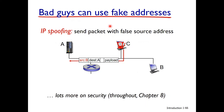Bad guys can also use fake addresses — this is called IP spoofing. The attacker sends a packet with a false source address. The message has a destination and a payload, but the source address is faked, hiding the real attacker's identity.